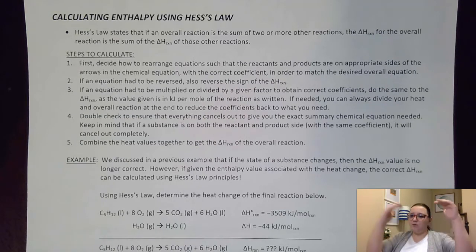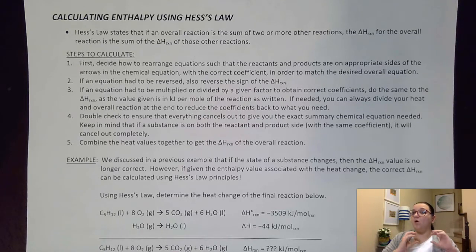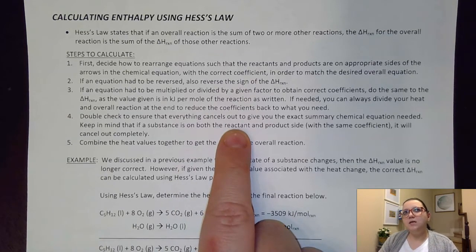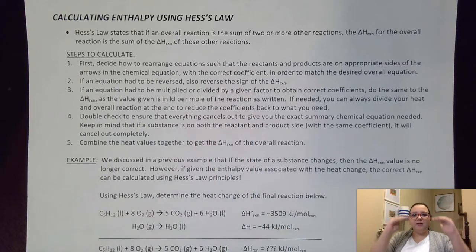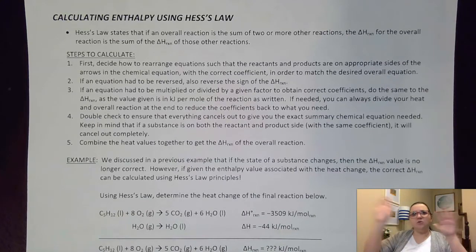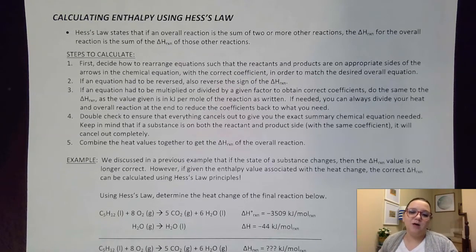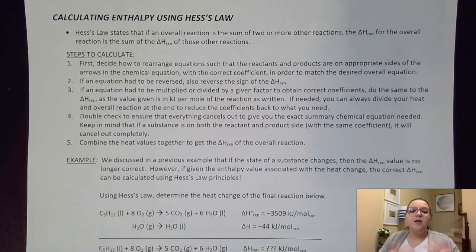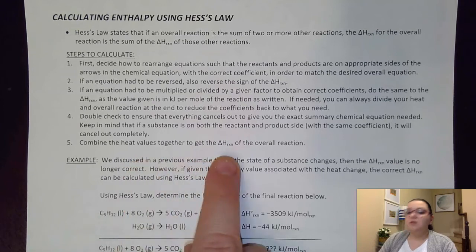Then I just double-check to make sure that all of my reactions combine to give me the overall one I'm looking for at the end. This step is kind of like what we did with mechanisms back in kinetics — when we combine individual steps to get an overall equation, sometimes we had to cancel things out from side to side. Once I've ensured that my overall reaction matches up, I simply add the heat values together to get the delta H of the reaction I'm looking for.